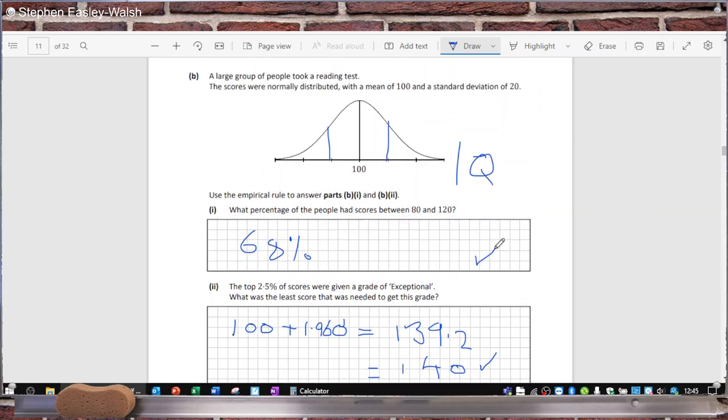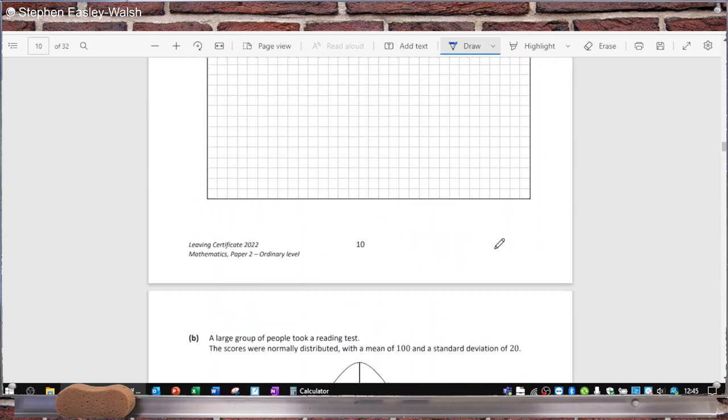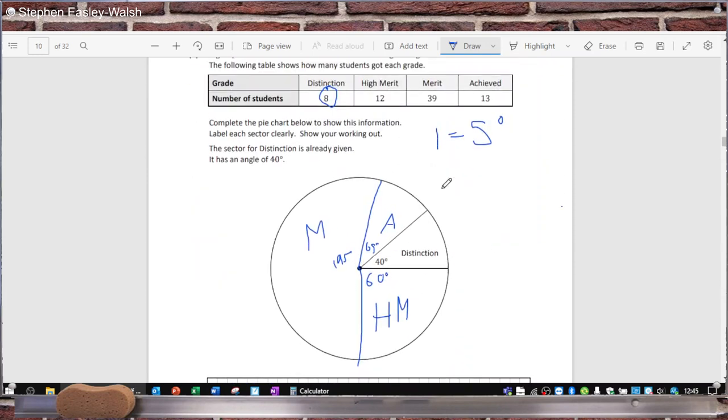68 is the empirical rule, plus or minus 1 standard deviation is 68%. And this checks out, this adds up to 360. So, I think, I hope we're okay now. Thanks for catching that, Tom.